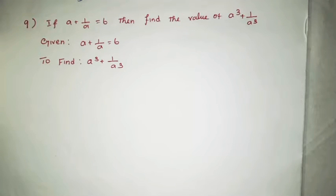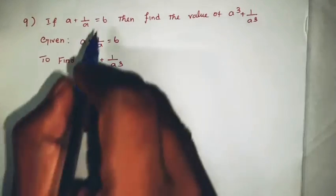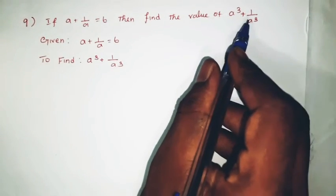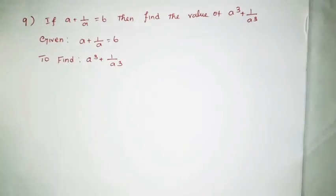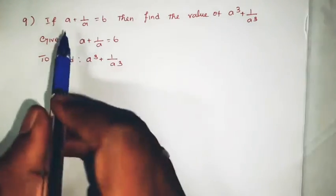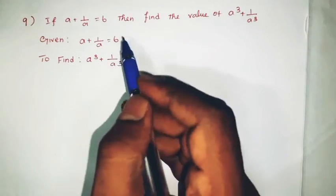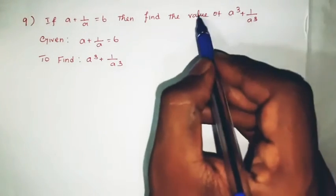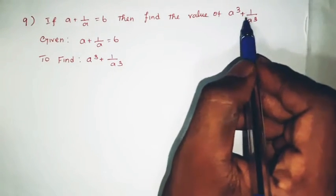So, Exercise 3.4, Question Number 9: If a plus 1 by a equals 6, then find the value of a cube plus 1 by a cube. Given: a plus 1 by a equals 6. To find: a cube plus 1 by a cube.